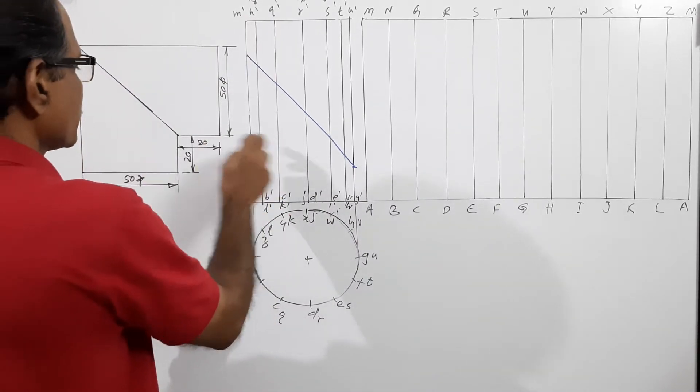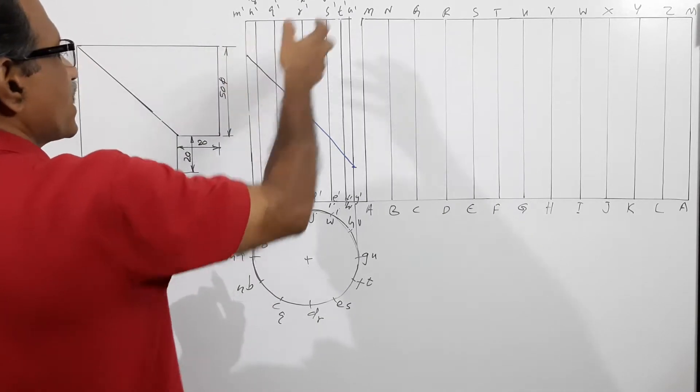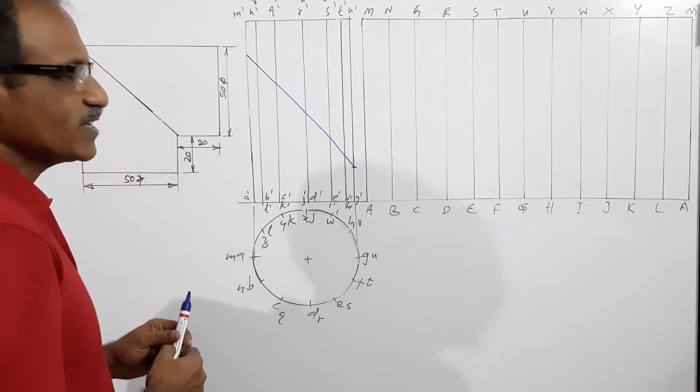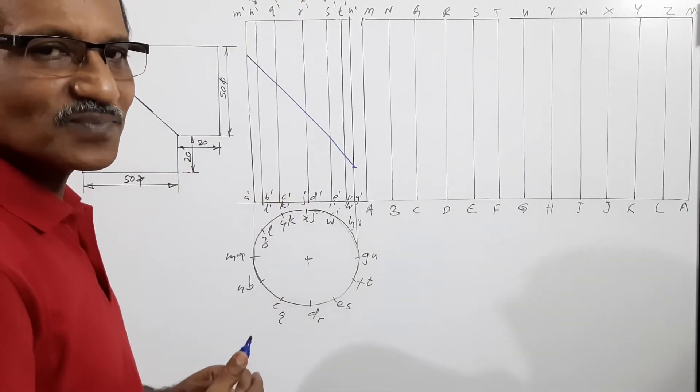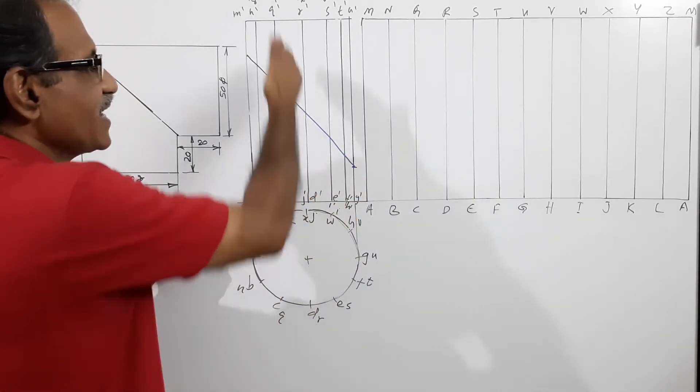The shape will be this. This is the first part. This is the second part kept over it. What is it? It is a cylinder. It is a cylinder of 50 mm diameter and height.